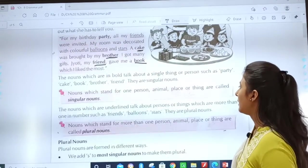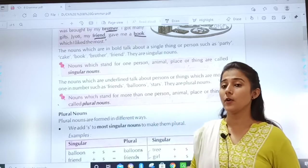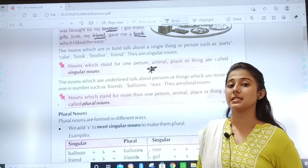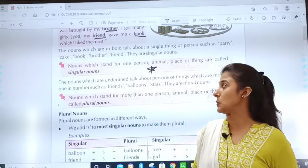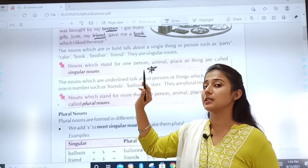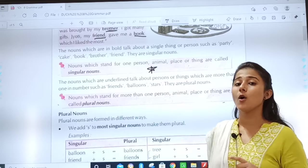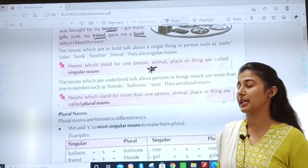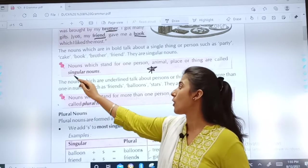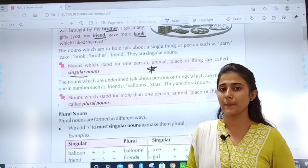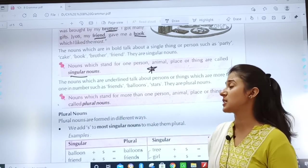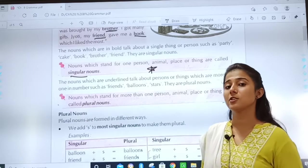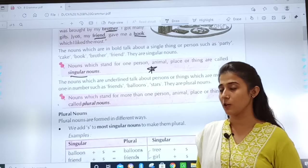Then, nouns. Now important. Mark this box as important. This is the definition of nouns. What are nouns? Nouns which stand for one person, animal, place or thing. This is the definition of singular nouns. So, nouns which stand for one person, animal, place or thing are called singular nouns.